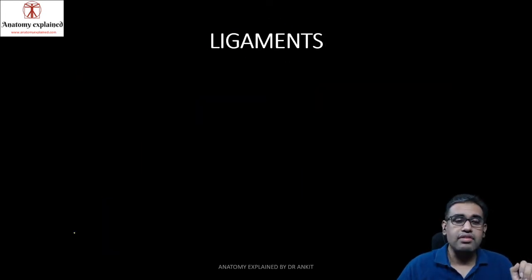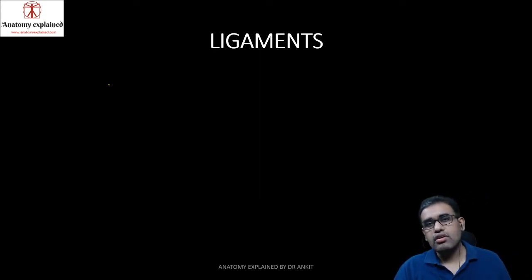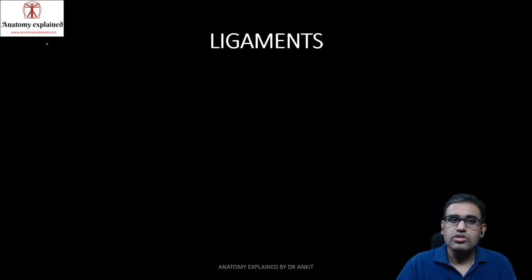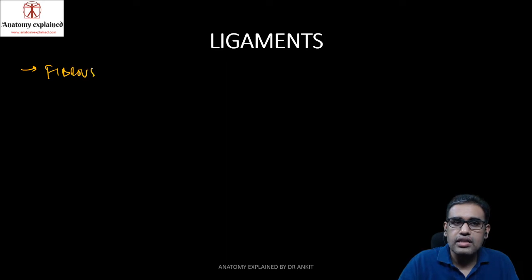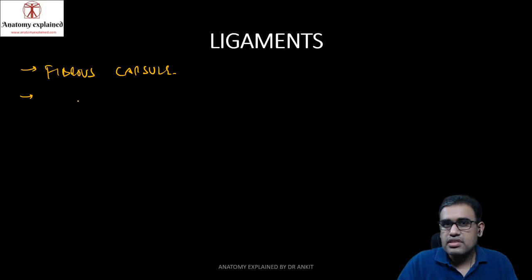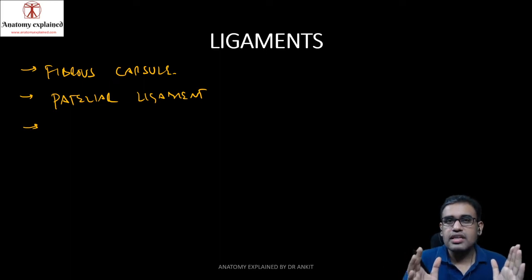Moving from the type of joint, we have the ligaments. As it is the largest joint in the body, it has to be supported by various structures, because when we walk or run, the whole weight of our body falls on these joints. There is a large fibrous capsule enveloping the joint from all sides. The capsule is strengthened anteriorly by the ligamentum patellae, or patellar ligament.